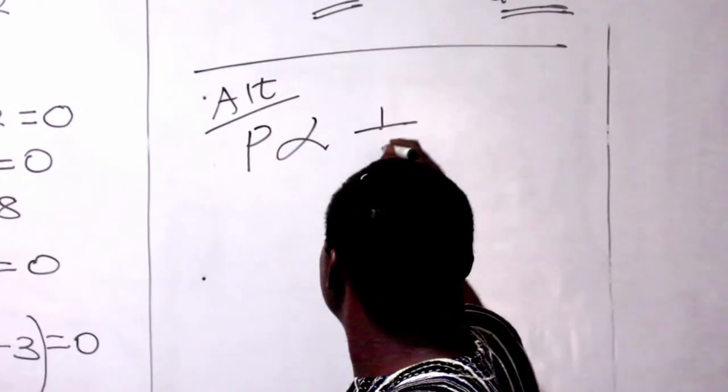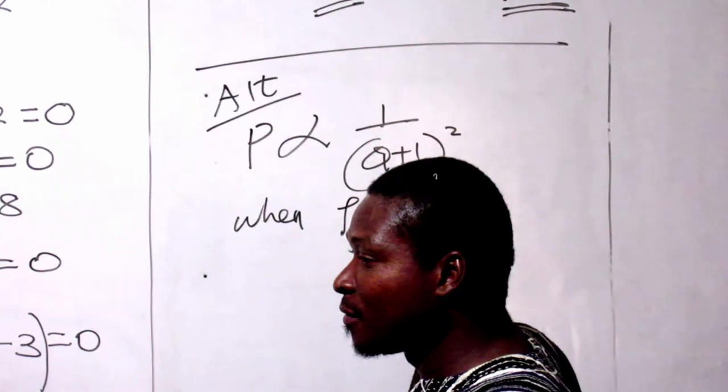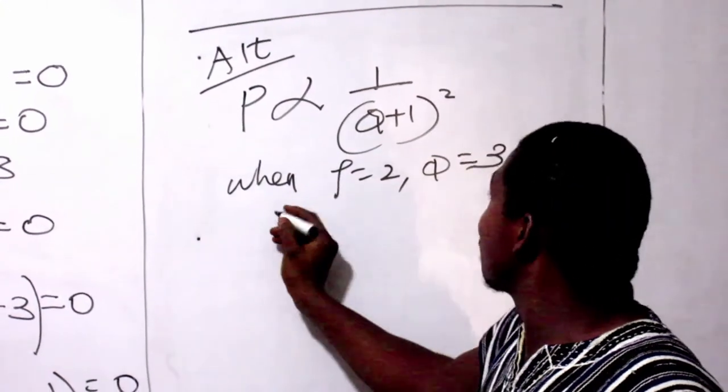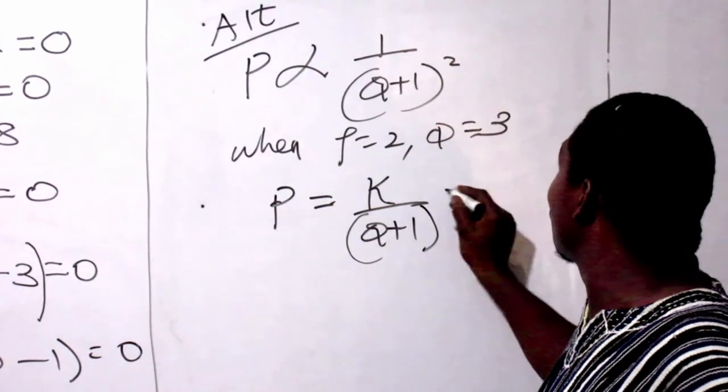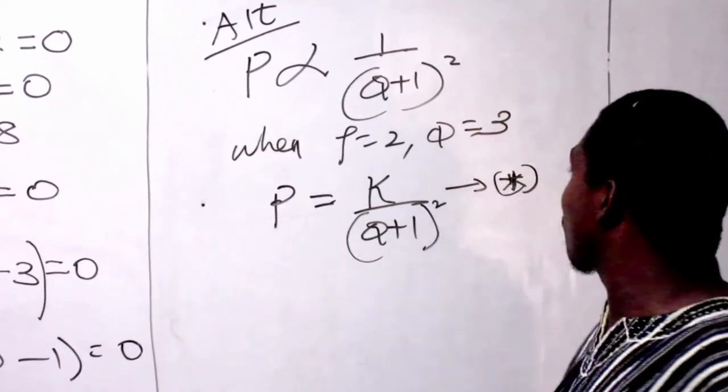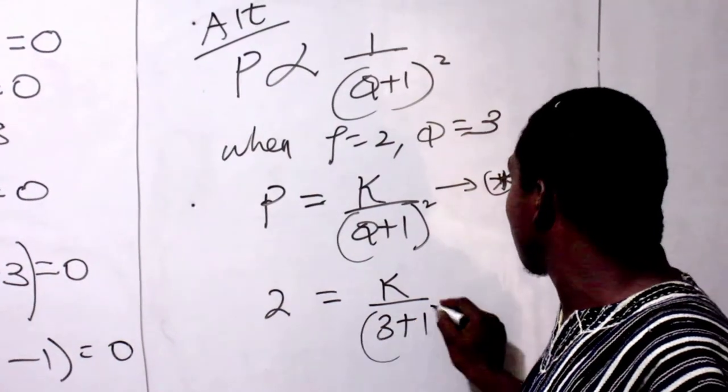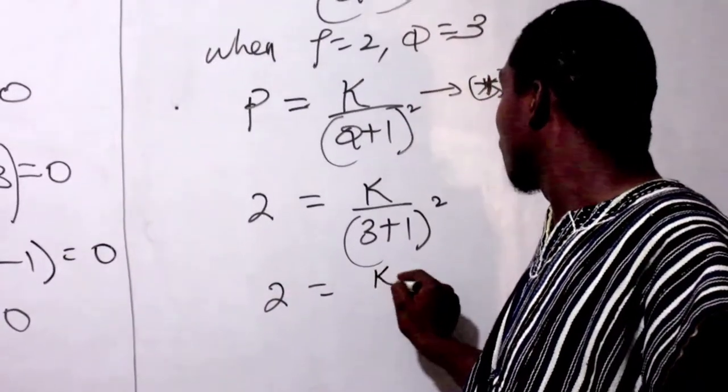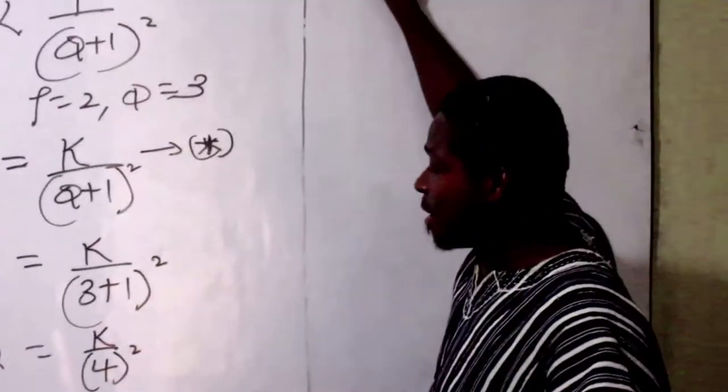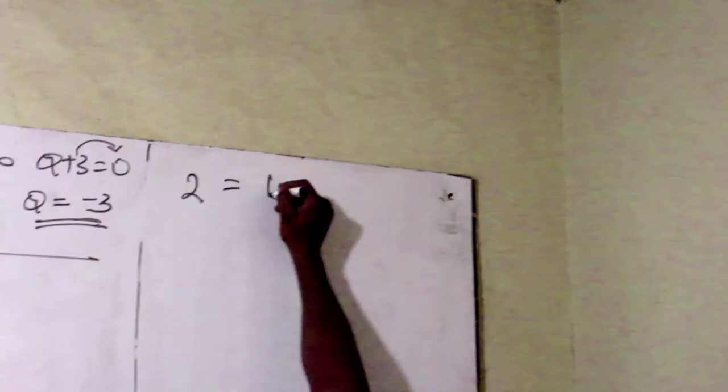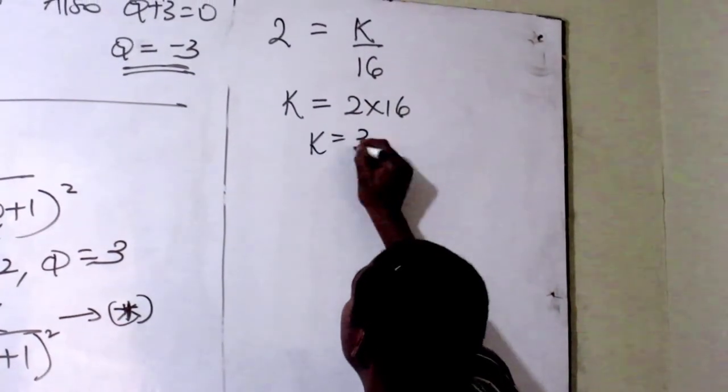Remember from the question, we are told that P varies inversely as the square of this. They gave us when P equals 2, KL is 3. Let's chip in. I think we have to introduce our constants as usual and level the equation appropriately. So P equals 2, K we don't know, 3 plus 1 squared. So 2 equals K over 4 squared. 2 equals K over 16. So K equals 2 times 16, K will give me 32.